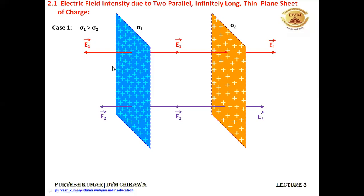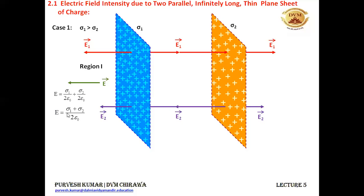In region 1, both E1 and E2 are acting in the same direction towards the left of the blue colored sheet and they add up. The net electric field in region 1 is E1 plus E2: sigma 1 upon 2 epsilon naught plus sigma 2 upon 2 epsilon naught equals (sigma 1 plus sigma 2) upon 2 epsilon naught, directed towards the left of the blue colored sheet.